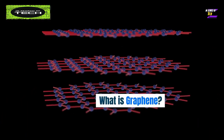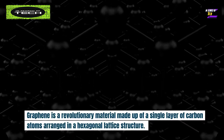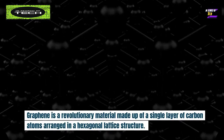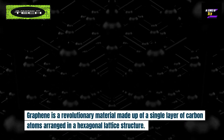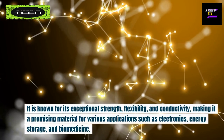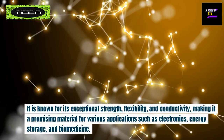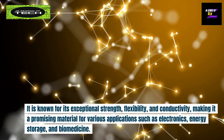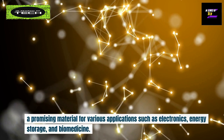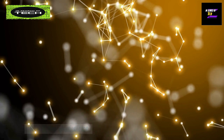What is graphene? Graphene is a revolutionary material made up of a single layer of carbon atoms arranged in a hexagonal lattice structure. It is known for its exceptional strength, flexibility, and conductivity, making it a promising material for various applications such as electronics, energy storage, and biomedicine.